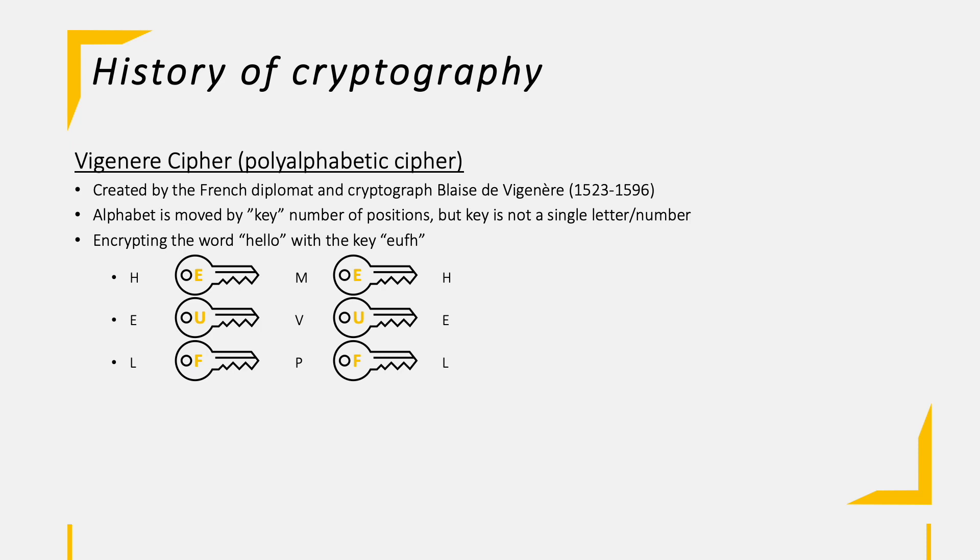The first L becomes a P as it is moved by F positions. Whereas the second L becomes a T as it is moved H times. Now the key length is exhausted as we only had four letters in a key. So the key starts from the first letter again, meaning the O is moved again by E positions to become a T.